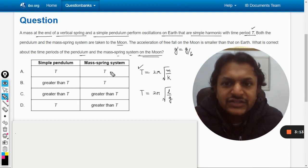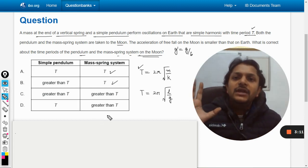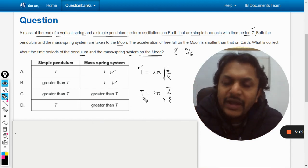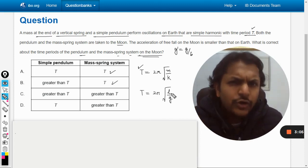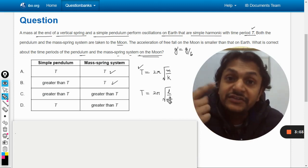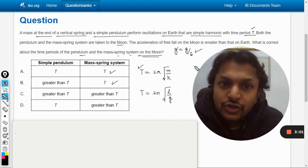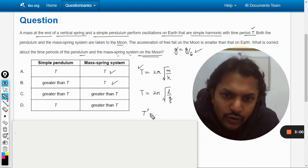But when it comes to the time period of the pendulum, you see it is definitely dependent on g. Length of the pendulum is not going to change, but g is getting divided by six, isn't it? So the time period now will be root six times the time period that on Earth.